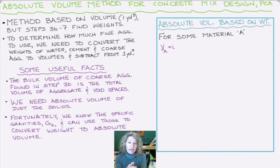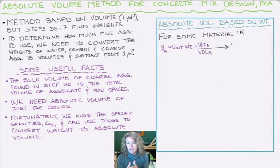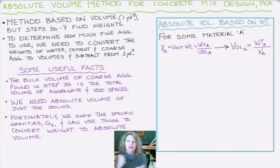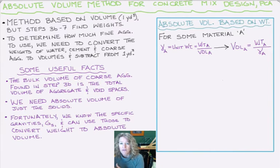Our unit weight is like a density, but instead of using mass over volume, we're using the weight of the material over volume. And we could rewrite that expression as the volume of material A would be equal to the weight over the unit weight.